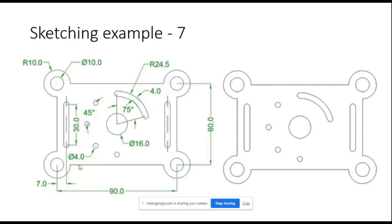This example is a best example for a slot — how to create a slot at a specific angle and how to make use of a trim. While understanding the drawing, you can see the best use of the center point rectangle. Here everything is based on the center, and your rectangle center, circle center, and construction circle center are all the same. The best thing to use here is a center point rectangle, not a corner rectangle. Always prefer the center point rectangle.